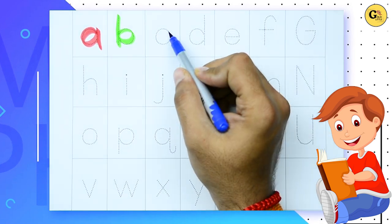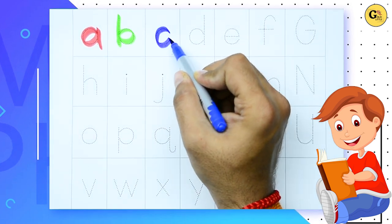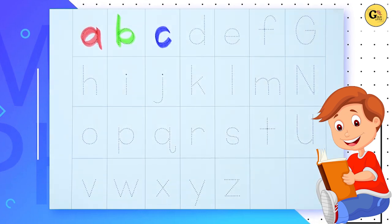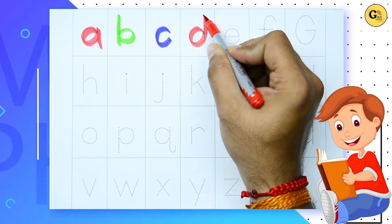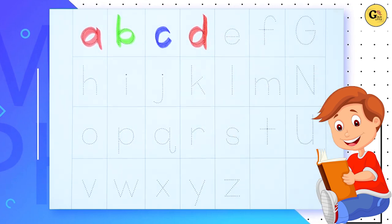Now we write c, yes, it's c, blue color, c. Red color, d, yes red color, d.